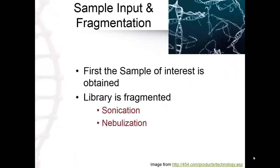The first step is sample input and fragmentation. In order to prepare the library for emulsion PCR, it must first be fragmented into smaller pieces of about 300 to 800 base pairs, which can then be sequenced. The process of cutting up a large strand of DNA, sequencing it, and then putting it back together is referred to as shotgun sequencing.